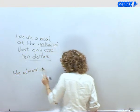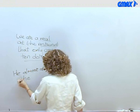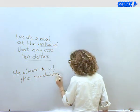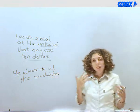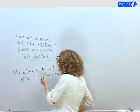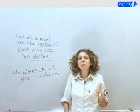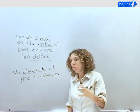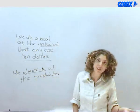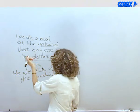He almost ate all the sandwiches. Once again, we have a problem here with a misplaced modifier. It's the fact that we said 'almost ate' instead of 'ate almost.' How does somebody almost eat something? He spit it out after chewing it? He almost ate all the sandwiches — you can't almost eat. You either eat it or you don't. So this is a problem of a misplaced modifier.